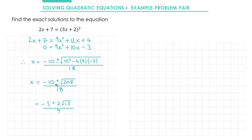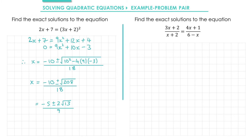If we do minus 10 minus root 208 over 18, it would be the same thing but with a minus sign. Here's a problem for you to try for yourself. As it's slightly different to my example I'll provide a hint in a few seconds, but before I do you might want to pause and see if you can do it yourself.